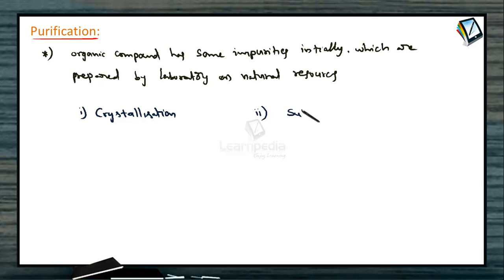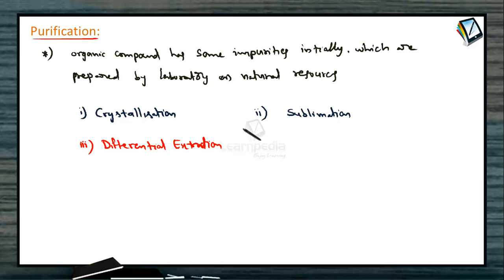Next is sublimation, which is used for compounds that are sublime in nature — on heating, these compounds are directly converted from solid to gas. The next process is differential extraction, usually used for organic compounds in the liquid state. If two organic compounds are mixed in the liquid state, you can differentiate them using differential extraction. Another method is distillation, also used for liquid compounds only.